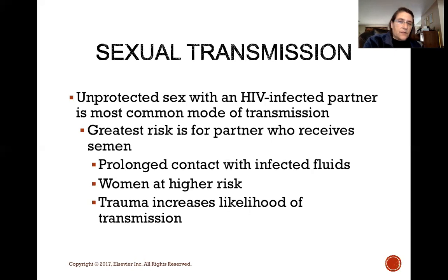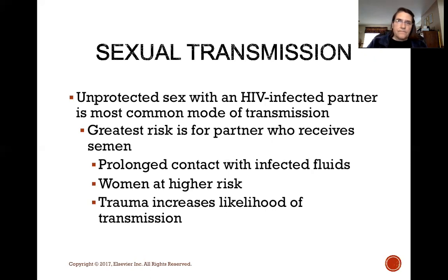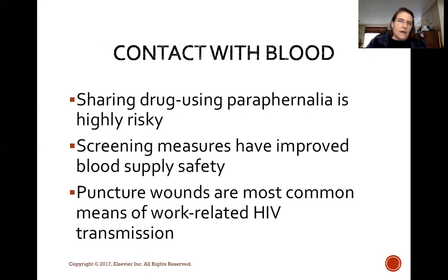Unprotected sex with an HIV-infected partner is the most common mode of transmission. The greatest risk is for the partner who receives semen. There's also a greater risk for the person with prolonged contact with infected fluids. Women are at higher risk, and any type of trauma increases likelihood of transmission. Sharing drug-use paraphernalia is highly risky. Screening measures have improved blood supply safety. Puncture wounds are the most common means of work-related HIV transmission, but the risk from a needle stick is still low.